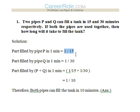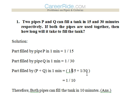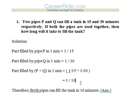Part filled by pipe P in one minute would be 1/15, as 15 minutes was the total time taken by pipe P to fill the tank alone. The part filled by pipe Q in 1 minute is 1/30 — similar concept. So part filled by P plus Q in 1 minute would be 1/15 plus 1/30, that is 1/10. So both the pipes can fill the tank in 10 minutes — the reciprocal of this would be the answer, that is 10 minutes.